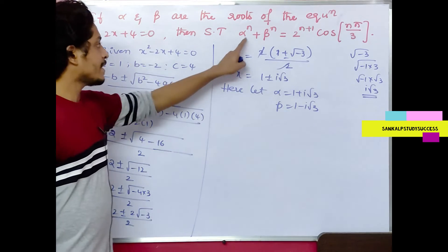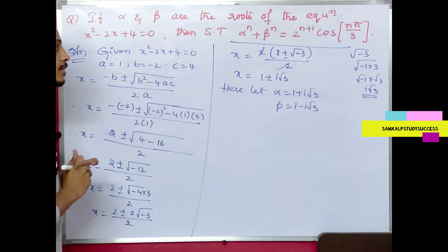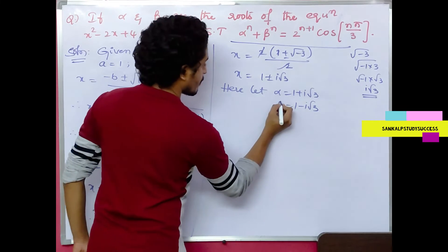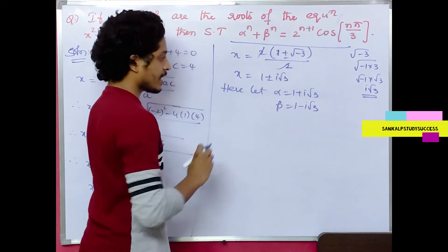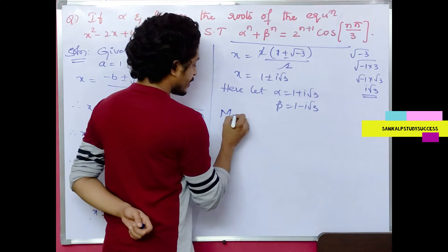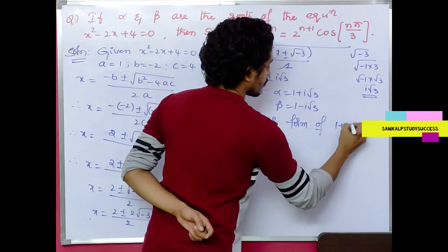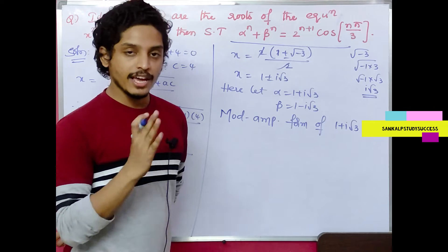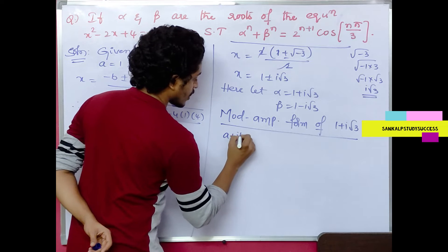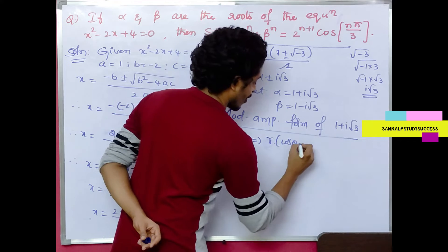So we have alpha and beta values, and we have to prove that α^n + β^n = 2^(n+1) · cos(nπ/3). Now α^n = (1 + i√3)^n. We write 1 + i√3 in the form r(cosθ + i sinθ), where r = √(a² + b²) and θ = tan⁻¹(b/a).